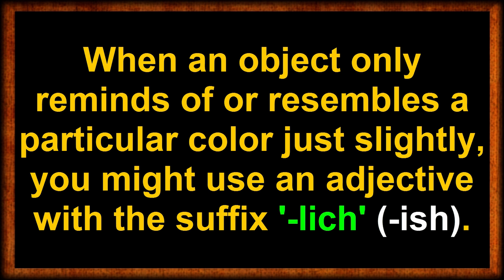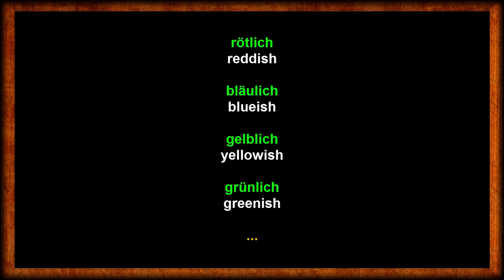When something reminds you of a certain color, or when an object only has a slightly visible color, you could also add the suffix -lich to color adjectives. So it's rötlich — reddish. Bläulich — bluish. Gelblich — yellowish. And grünlich — greenish. Make sure to spell rötlich with the umlaut ö, and bläulich with the umlaut ä.